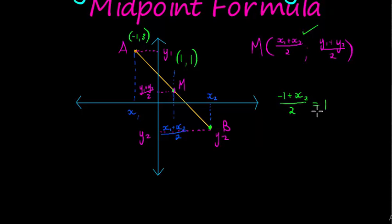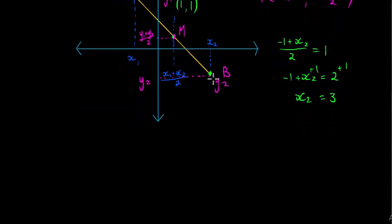Now I can just solve it. I multiply both sides by 2 to get rid of the fraction. That gives negative 1 plus X2 equals 2. Then I add 1 to both sides, so X2 equals 3. Excellent. So this X value must be 3.